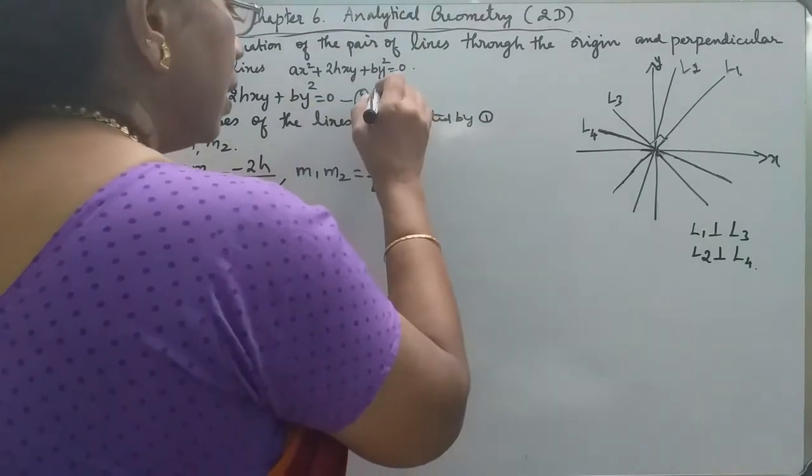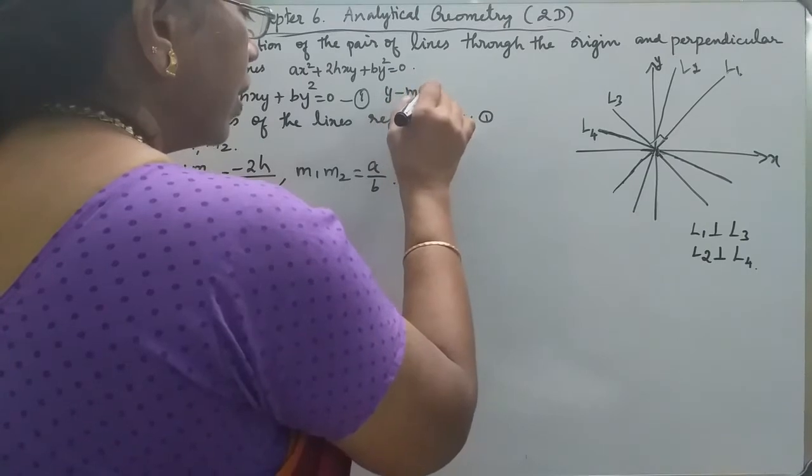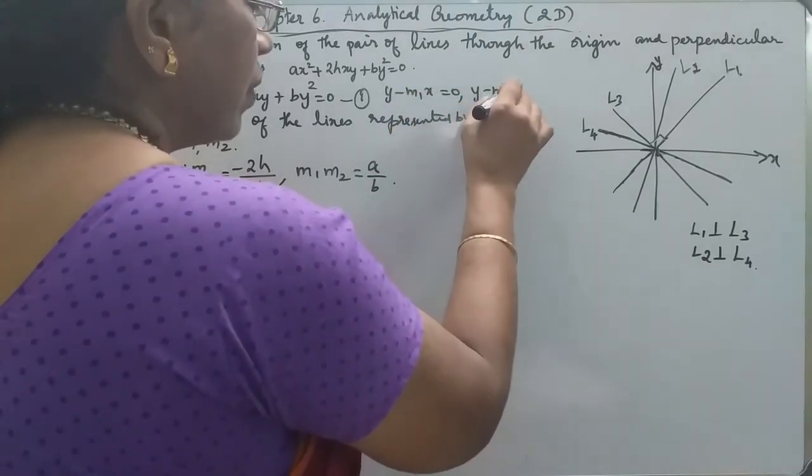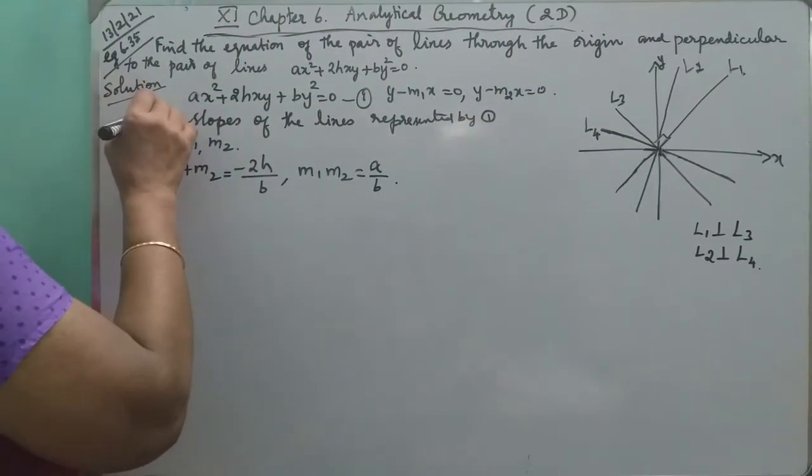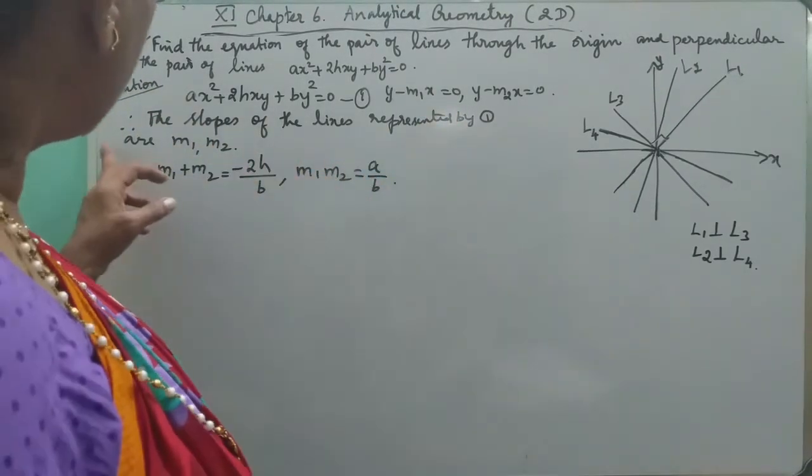Let the given line be y minus m1x equal to 0. And the line y minus m2x equal to 0. Therefore, the slopes of the lines represented by these are m1 and m2.